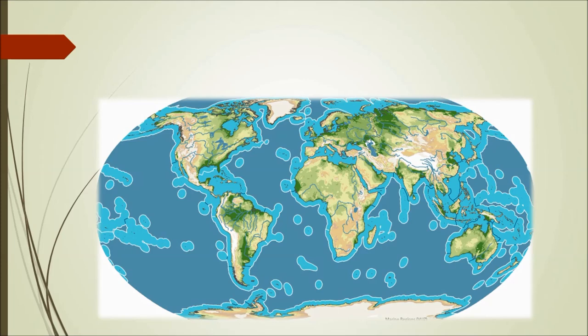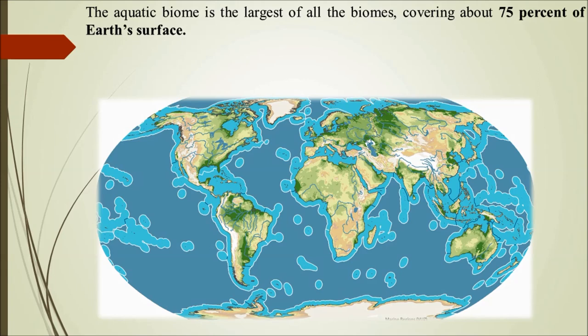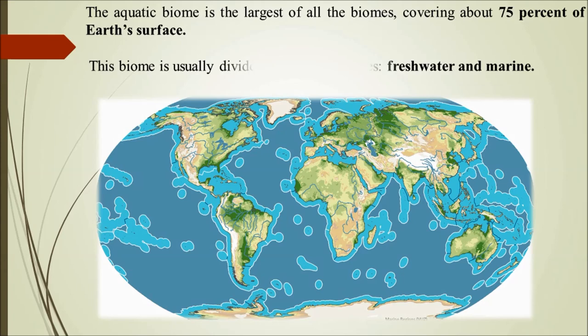The aquatic biome is the largest of all the biomes we have studied by far. It covers 75% of Earth's surface. This biome is broadly divided into two categories: freshwater and marine — freshwater ecosystems on land, and marine, that is the oceans.